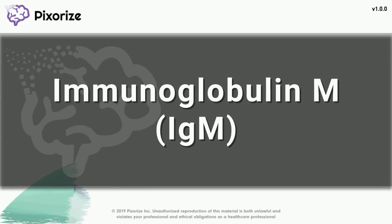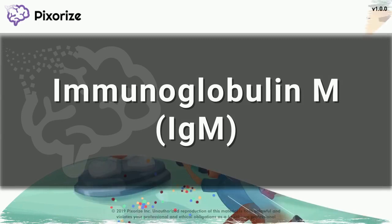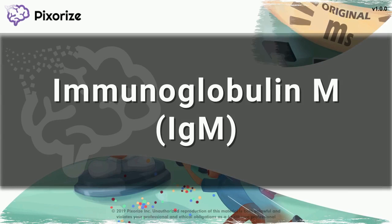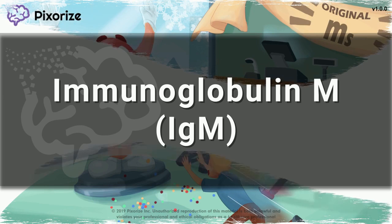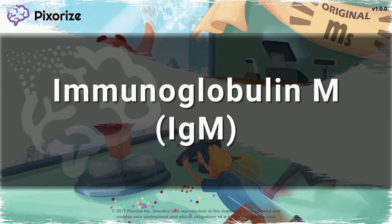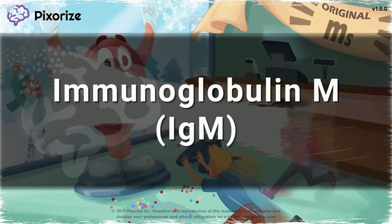Immunoglobulin M, or IgM for short, is one of the five subtypes of antibodies, a protein produced by B cells to help fight infections. IgM is the default antibody type produced and plays an important role in activating the complement cascade.